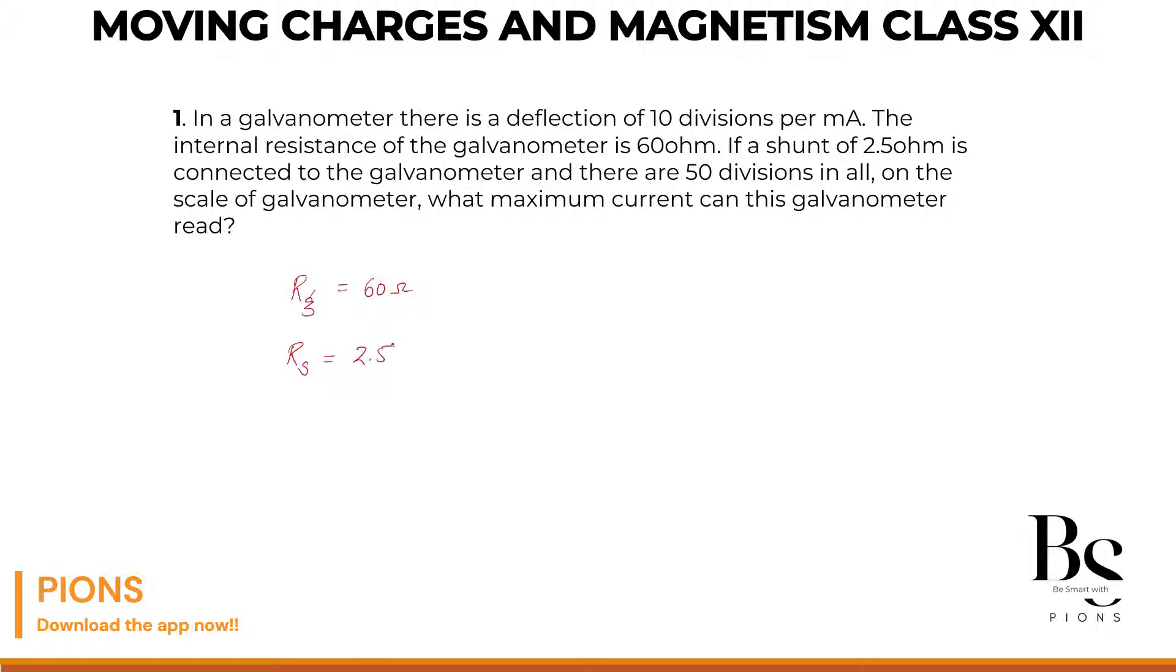So 2.5 ohms is connected to the galvanometer and there are 50 divisions in all on the scale of galvanometer. Number of divisions are 50.